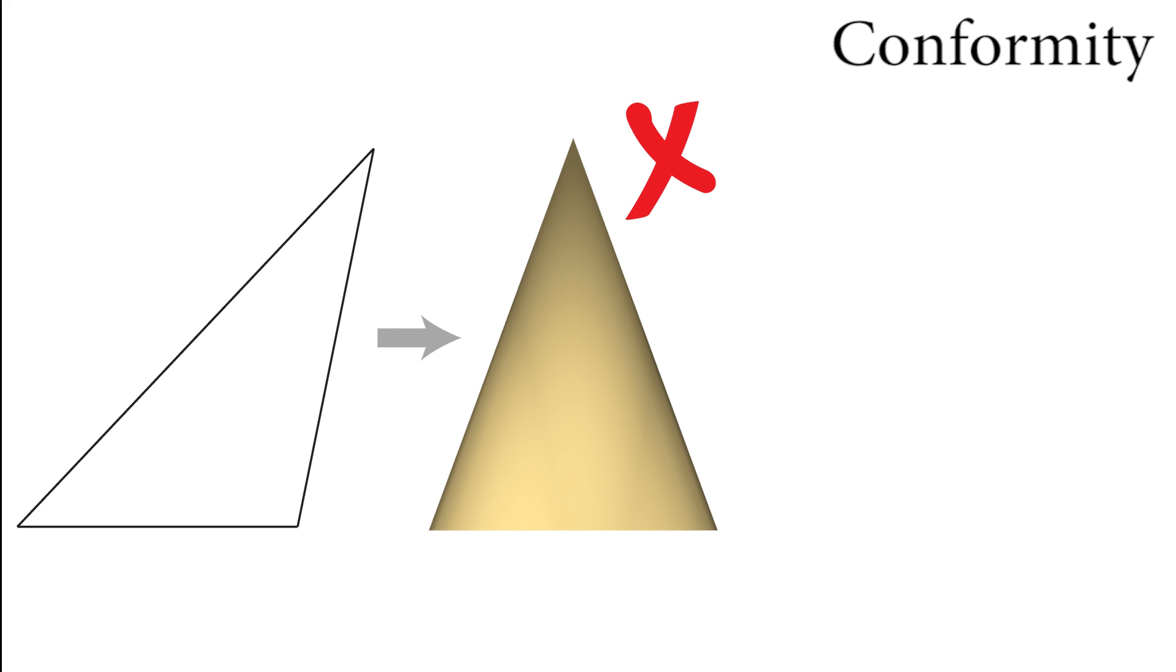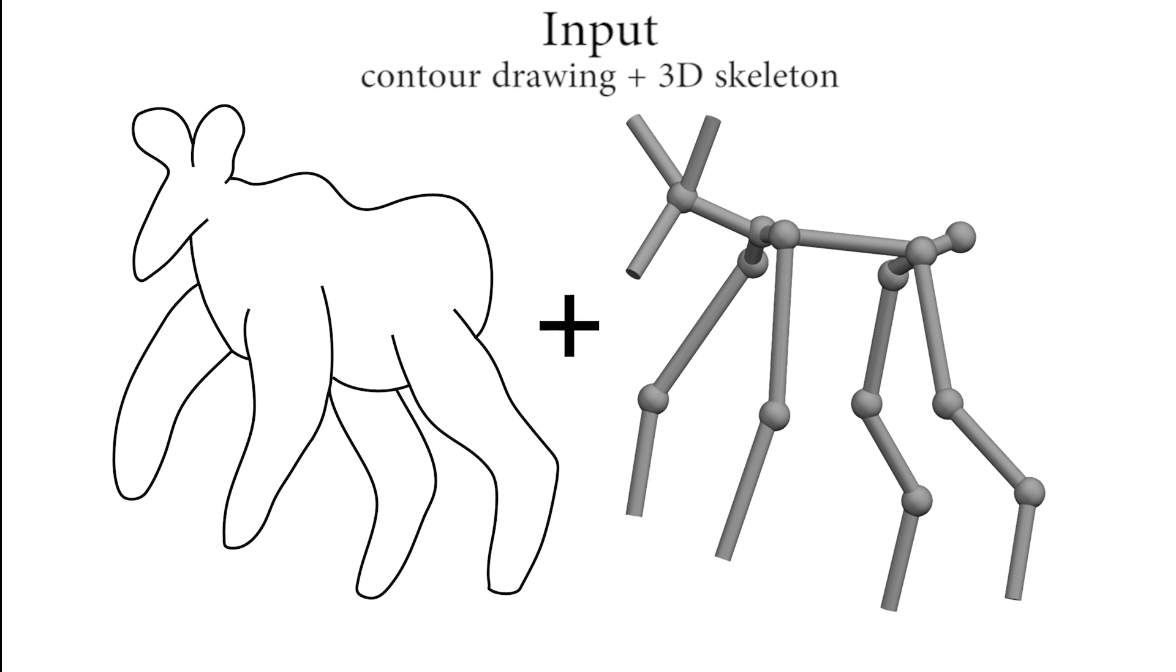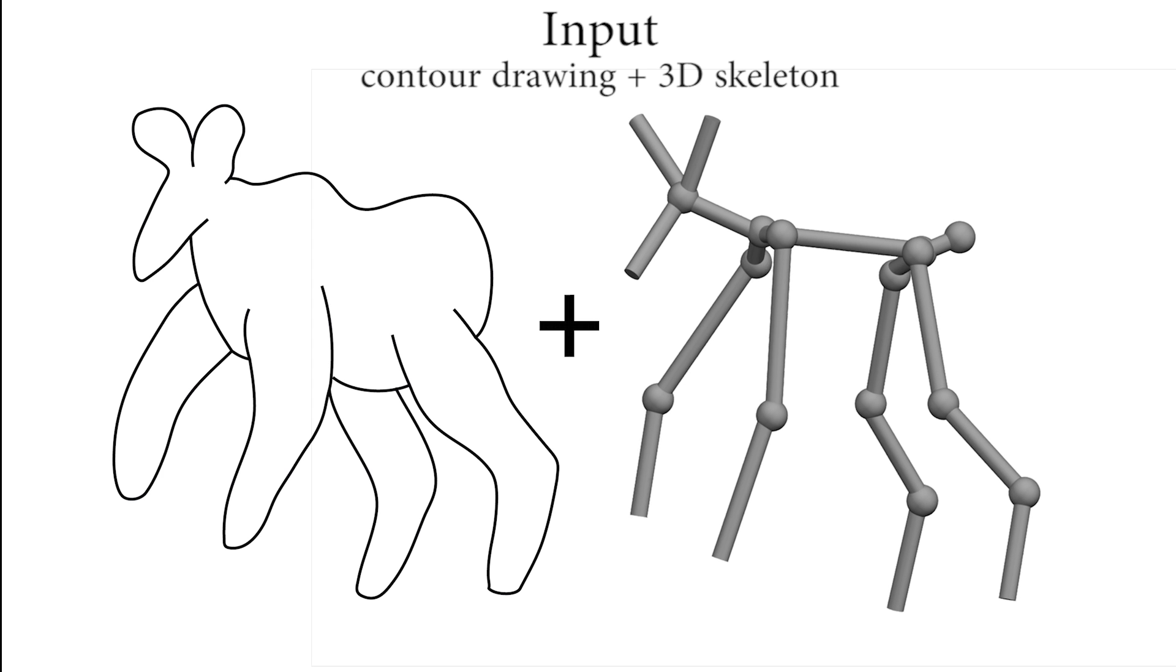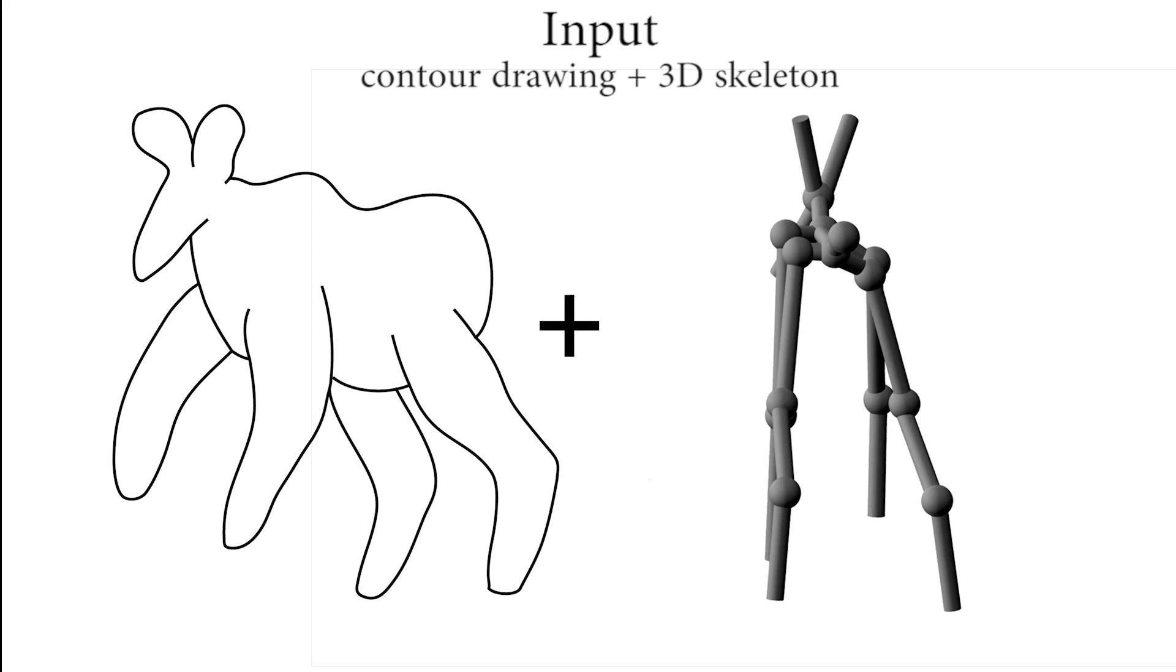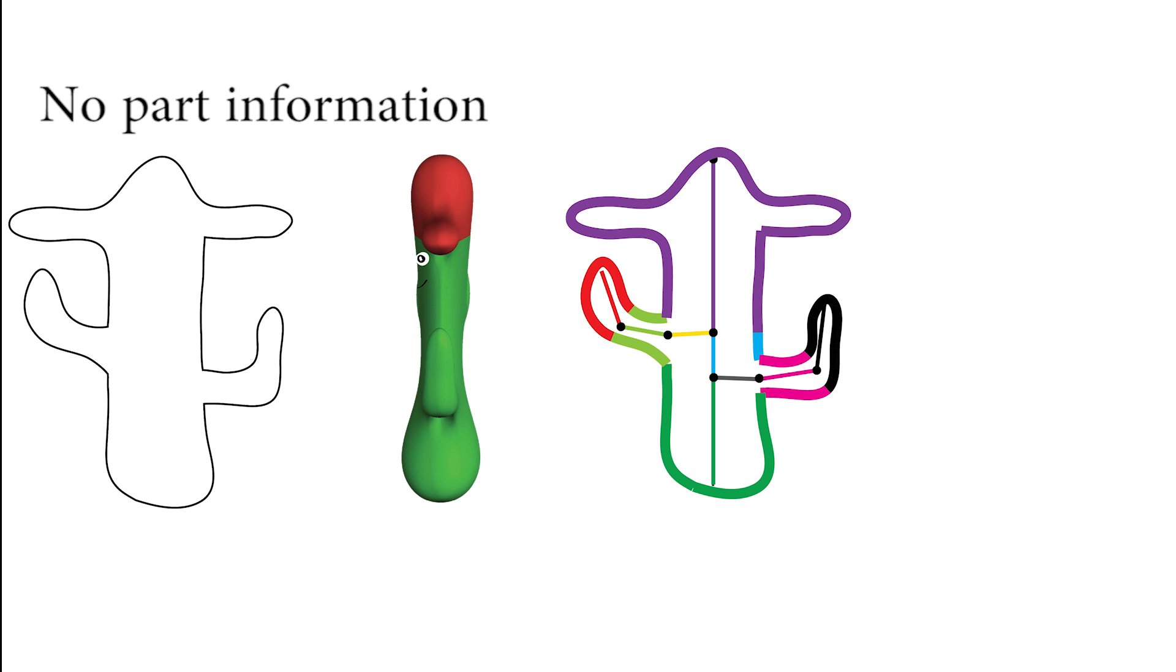Finally, contours of the character are expected to conform to the 2D contours. Our algorithm takes a 2D contour drawing and a matching 3D skeleton as input. Without the intended skeletal structure as input, 3D interpretation of a contour drawing is ambiguous.